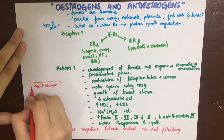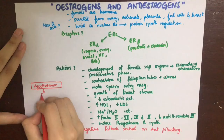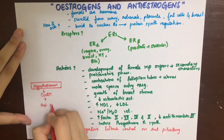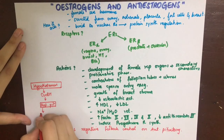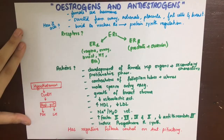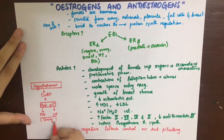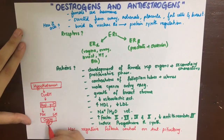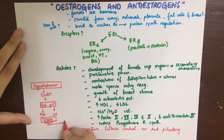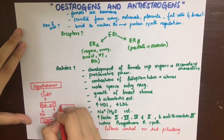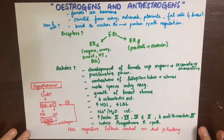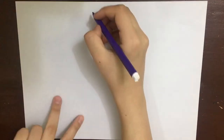Estrogen also decreases antithrombin III and will induce progesterone receptor synthesis. Estrogens have a negative feedback control on the anterior pituitary. The hypothalamus secretes GnRH, which acts on the anterior pituitary to release FSH and LH. FSH acts on the Graafian follicles to release estrogen, which then inhibits the anterior pituitary only — not the hypothalamus.